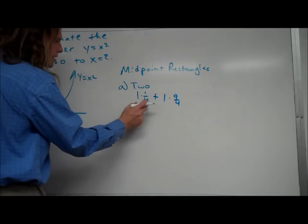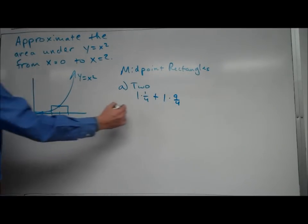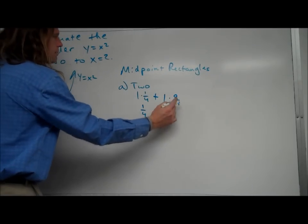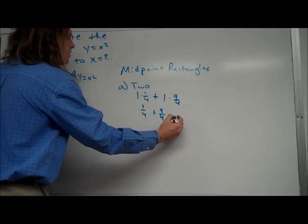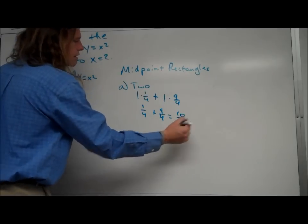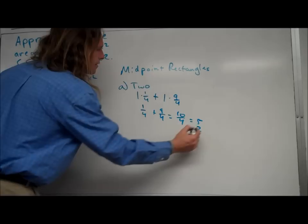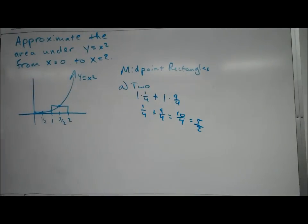So the area of the first rectangle is one-fourth. The area of the second rectangle is nine-fourths. Overall, we have ten-fourths, which simplifies to five-halves. And there you go. That's an approximation using midpoint rectangles.